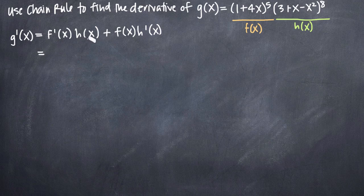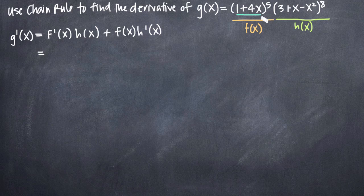So given that roadmap, we're going to be taking the derivative of f of x — here's where chain rule comes in. In order to take the derivative of the quantity 1 plus 4x to the 5th, we have to recognize an inside function and an outside function. The outside function is the whole thing: the quantity 1 plus 4x to the 5th. The inside function is what's inside — it's 1 plus 4x. So what we need to do when we use chain rule is take the derivative of the outside function, leaving the inside function completely alone, and then multiply that result by the derivative of the inside function.